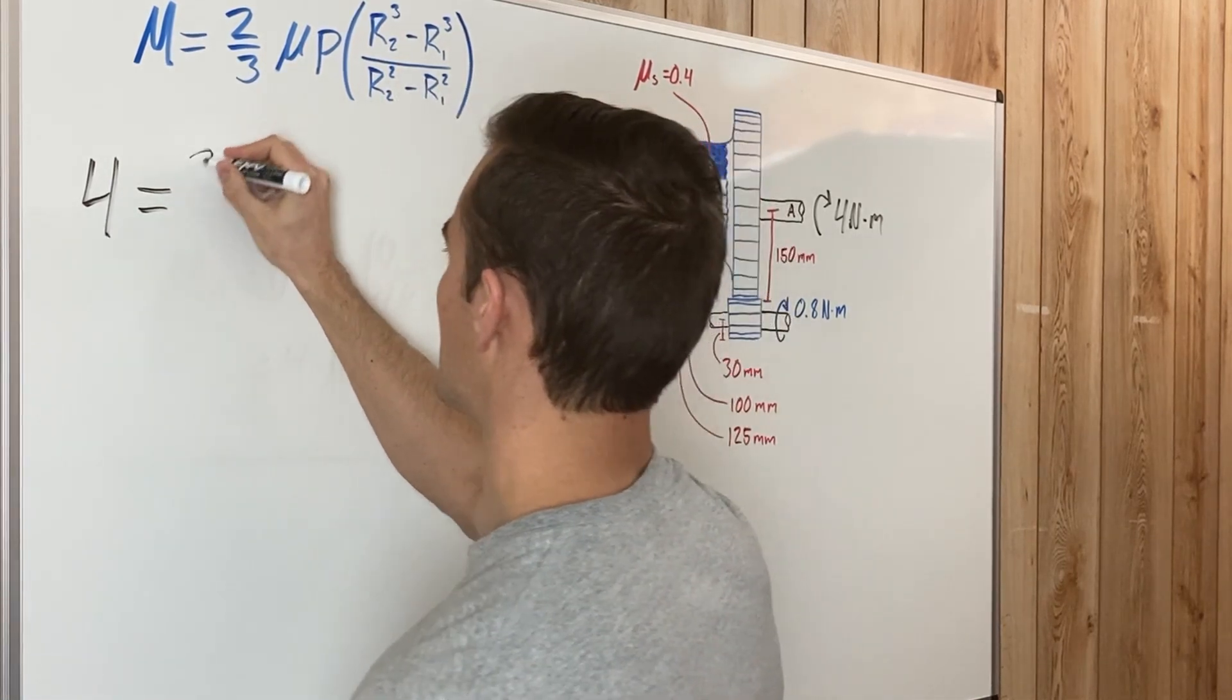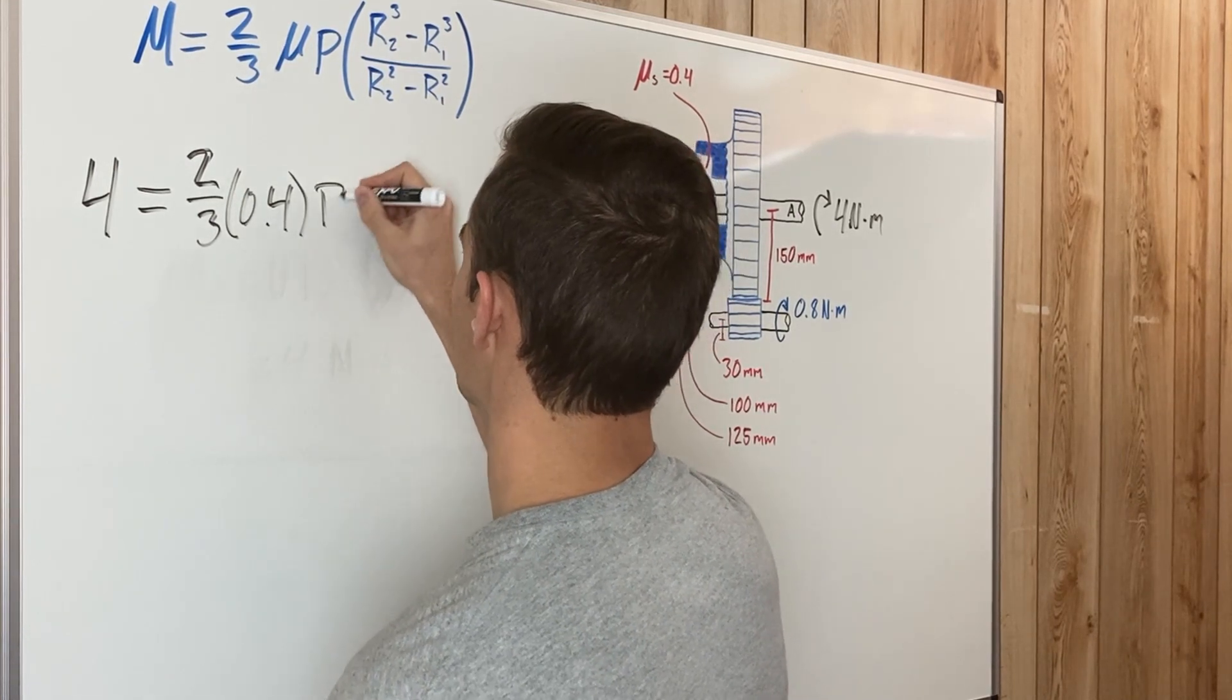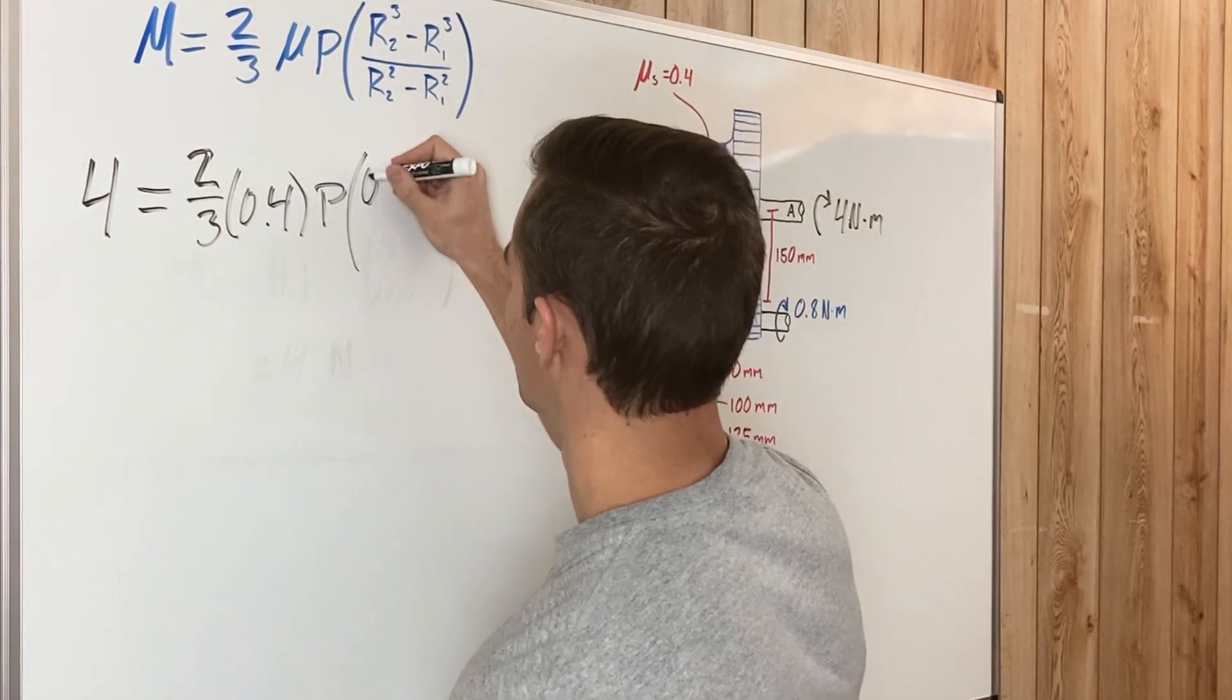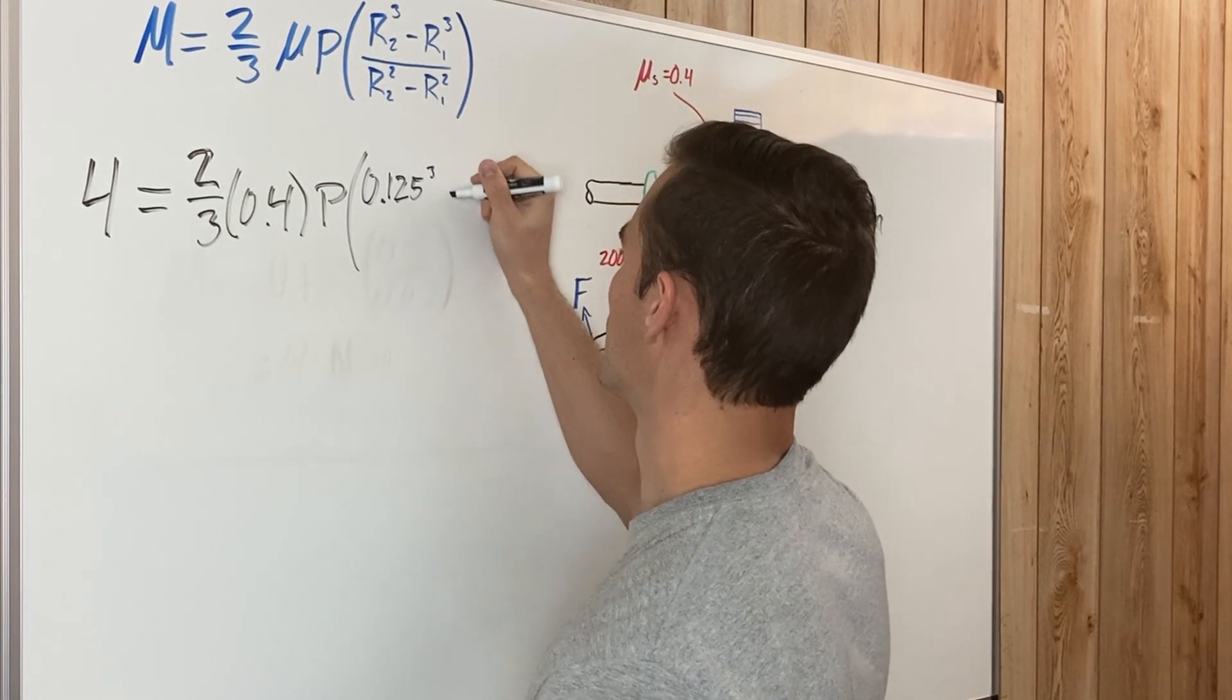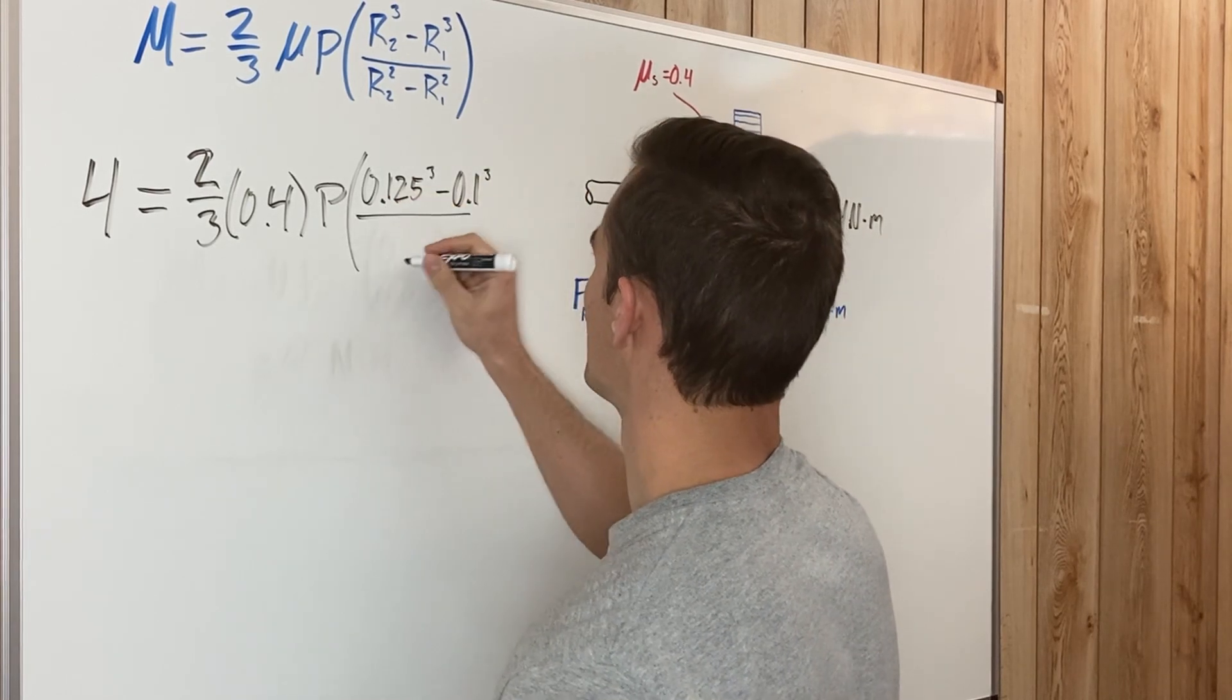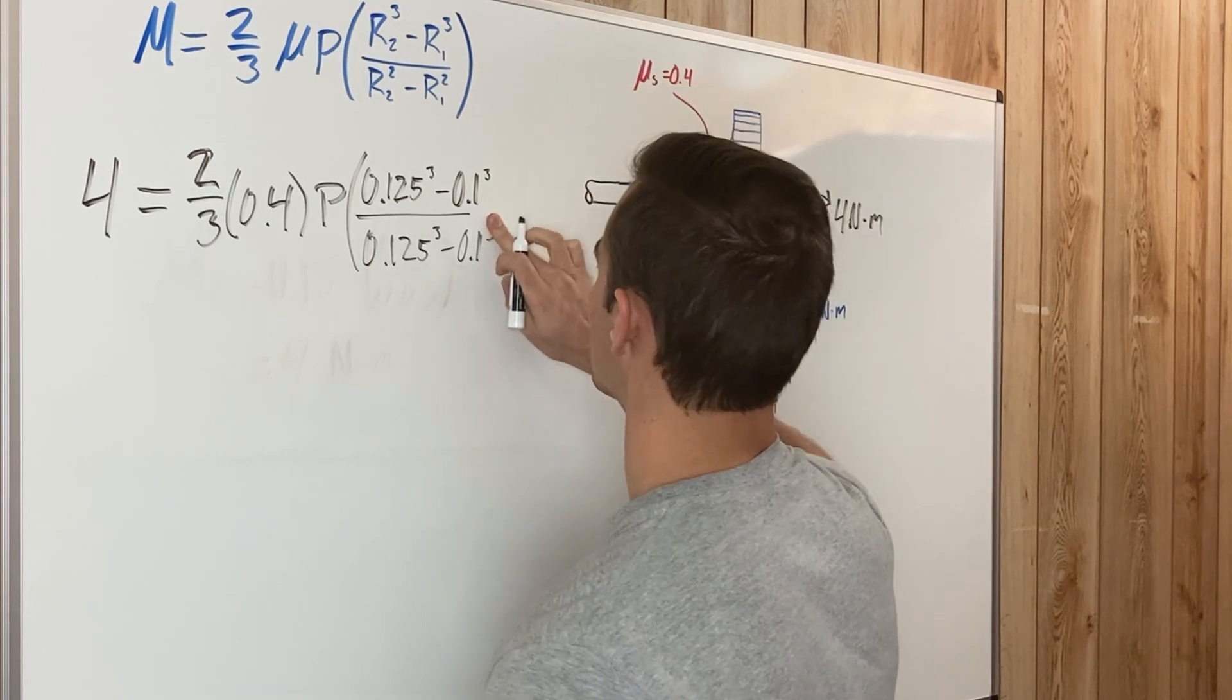Equals two-thirds times by 0.4, which is the coefficient of static friction, multiply by P, and then our radius two is the bigger radius. In meters, that's 0.125 cubed minus the smaller one, which is 100 millimeters or 0.1 meters cubed. Then once again on the bottom, just squared.